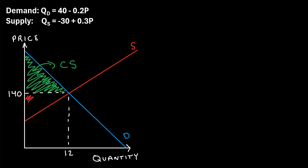On the flip side, this area of the graph — the area below the equilibrium price but above the supply curve — is called the producer surplus. This is the sum of all of the transactions where the producers were willing to sell it for a lower price, but they actually got to sell it for $140. For example, maybe a producer would have sold this good for $120, but they got to enjoy the benefit of selling it for $140, the equilibrium price. So the sum of all of those transactions is the producer surplus.